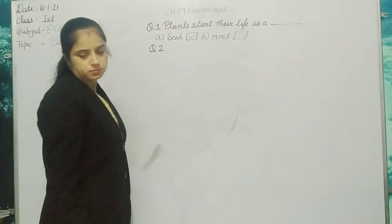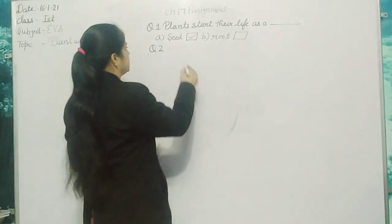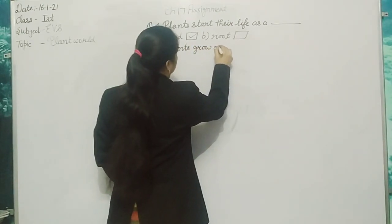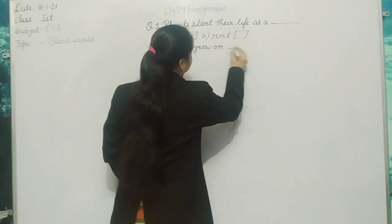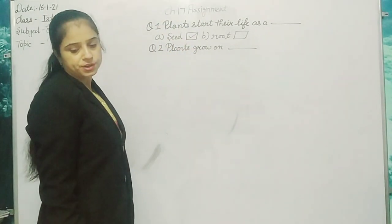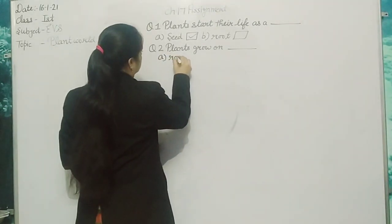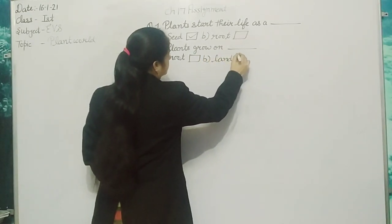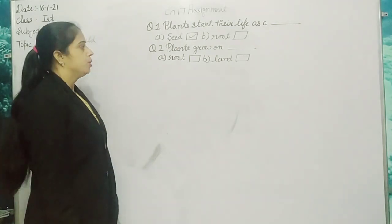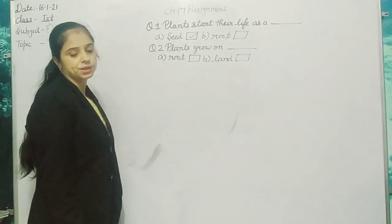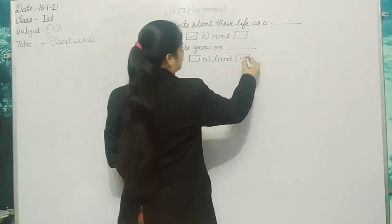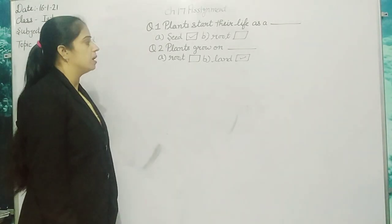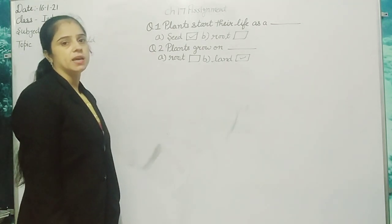Question 2: Plants grow on dash — root or land? Option A: root. Option B: land. Plants grow on land. Which one will you mark? Land.